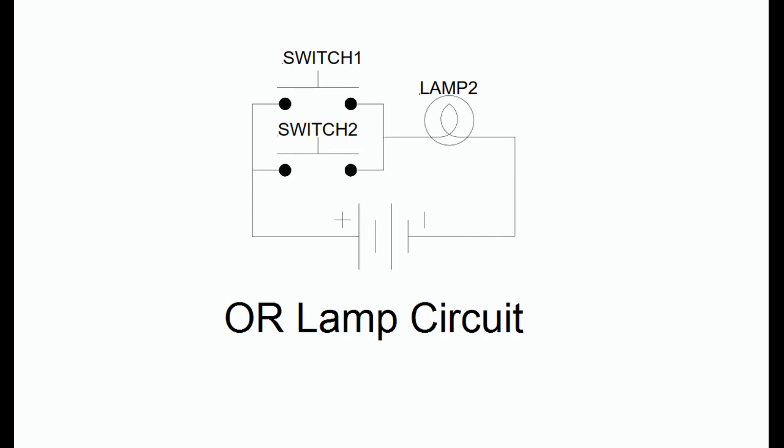The same approach may be taken for the OR function. The circuit shown in figure illustrates two switches wired as an OR function controlling a lamp, lamp 2. As can be seen from the circuit, the lamp will illuminate if switch 1 or switch 2 is closed.